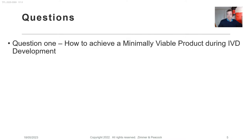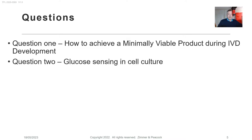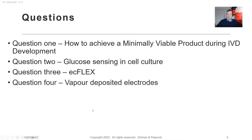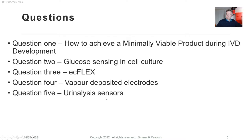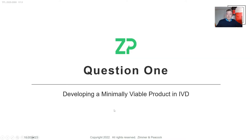Question number two is a quick one about glucose sensing in cell culture. Question number three is an update on something we're doing with a client or collaborator on EasyFlex. Question number four was a fun little interaction about vapor deposition of gold electrodes. Question number five is about urinalysis — launching companies around urinalysis and the expected cost of goods that people could expect. Questions one and five are somewhat related.